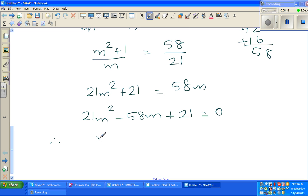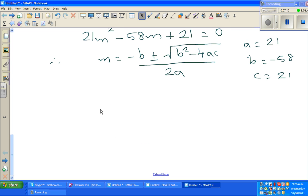So, therefore, you can also use the quadratic formula if you know it. The quadratic formula is m equals minus b plus or minus square root of b squared minus 4ac over 2a. Where your A is 21, your B is minus 58, and c is 21. If you put it, you'll get two answers. I don't want to waste my time here, you can do that on your own. So m is 7 thirds or m is 3 sevenths.